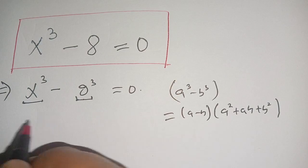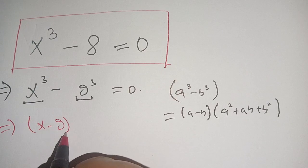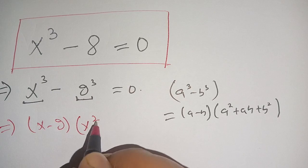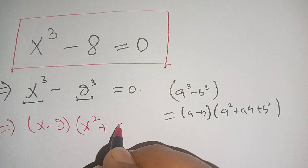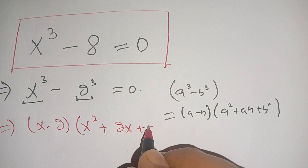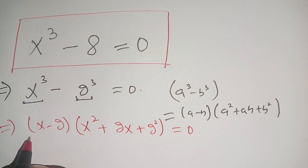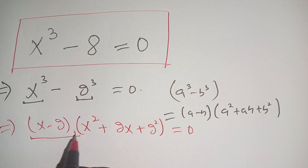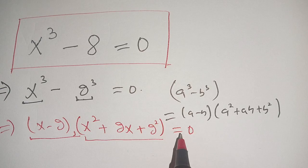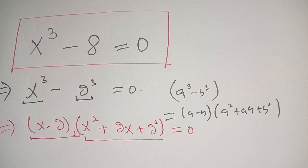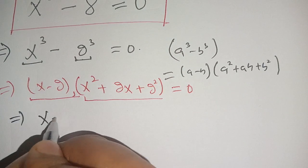Now we apply this formula. We get (x minus 2) times (x squared plus 2x plus 2 squared) equals 0. So here we have two terms: the first term is (x minus 2) and the second term is (x squared plus 2x plus 2 squared) equal to 0.